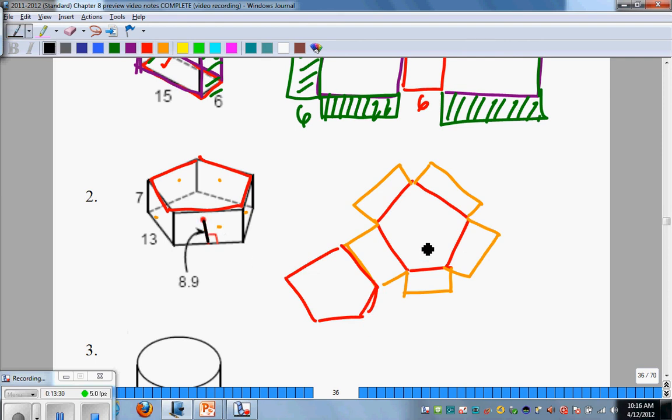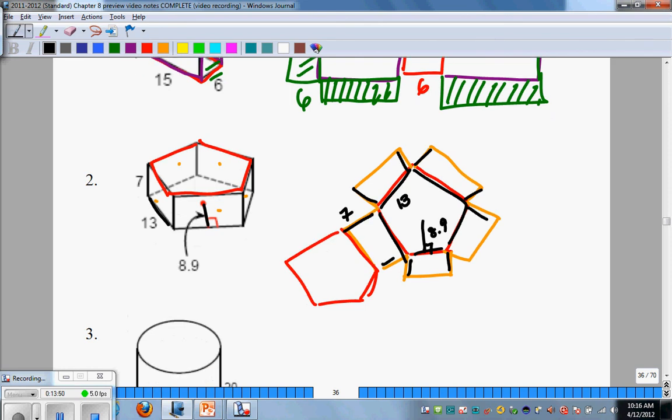Our apothem is 8.9, and our edge length of a pentagon is 13, and it's regular so it would be 13 all the way around. We're told that this edge length of all of these is 7. So that would be the net of that prism.